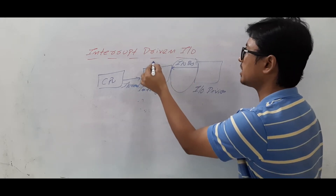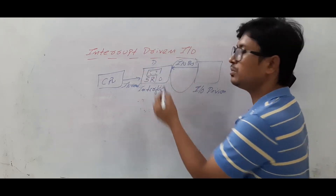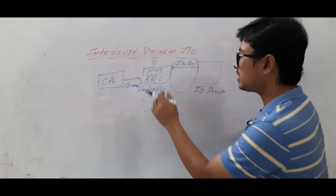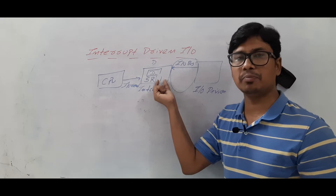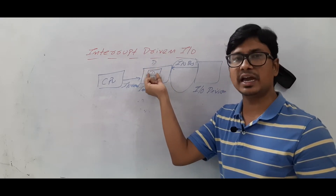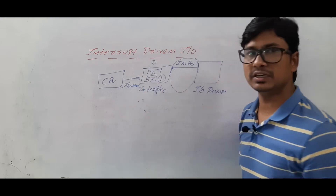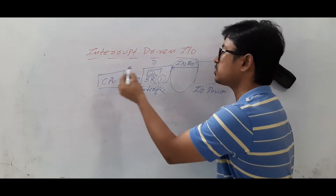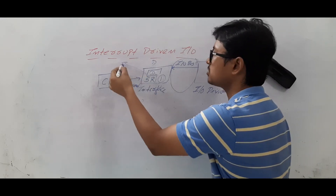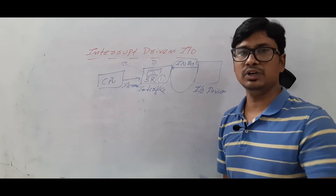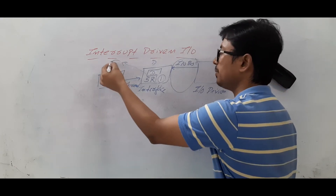Let's say the keyboard has given the character 'D'. The keyboard gives one character — one byte — at a time. That character is stored in the data register, and the status register flag bit becomes 1. Since the CPU is doing some other task, the interface sends an interrupt signal to the CPU, which then comes back and reads the content from the data register.